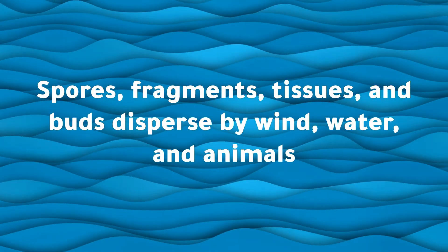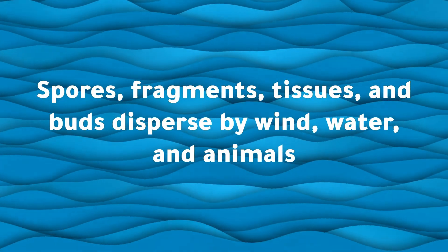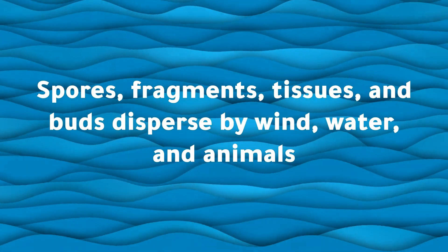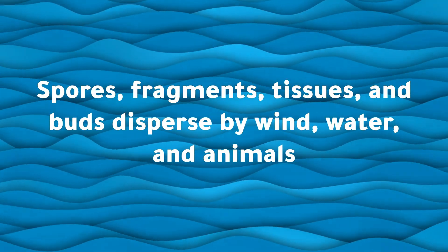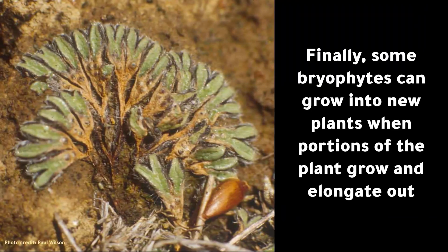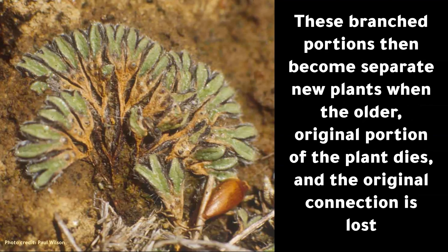Spores, fragments, tissues, and buds are dispersed by wind, water, and animals. Finally, some bryophytes can grow into new plants when portions of the plant grow and elongate out. These branched portions then become separate new plants when the older original portion of the plant dies and the original connection is lost.